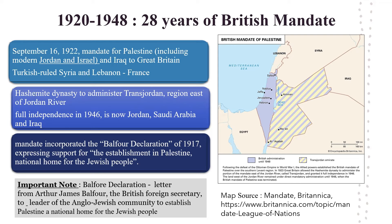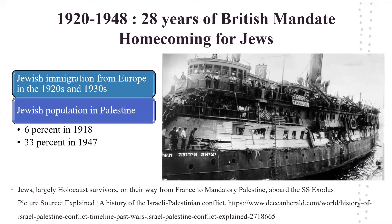The British allowed the Hashimite dynasty to administer a region east of the Jordan River called Transjordan. The region got full independence in 1946 and is now Jordan, Saudi Arabia and Iraq. The British mandate over Palestine incorporated the Balfour Declaration of 1917, expressing support for the establishment in Palestine of a national home for the Jewish people. The Balfour Declaration was a letter from Arthur James Balfour, the British Foreign Secretary, to the leaders of the Anglo-Jewish community to establish Palestine as a national home for the Jewish people. British mandate facilitated Jewish immigration from Europe to Palestine in the 1920s and 1930s. Jewish population in Palestine increased from 6% in 1918 to 33% in 1947.